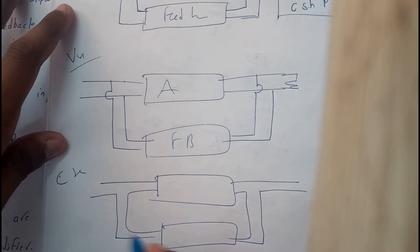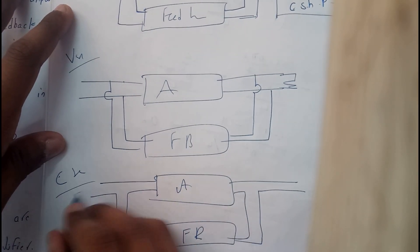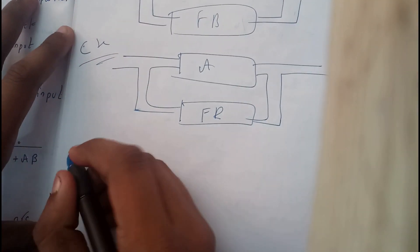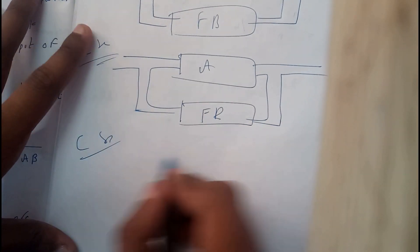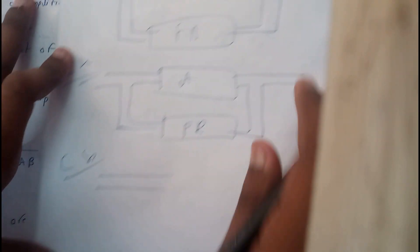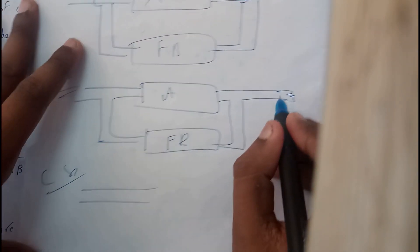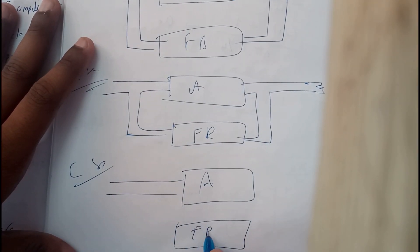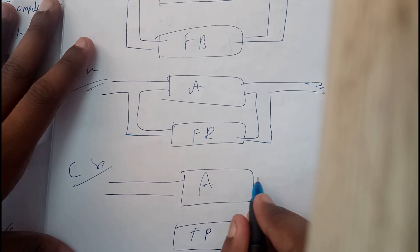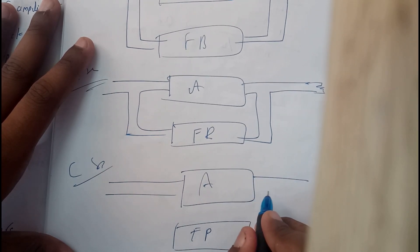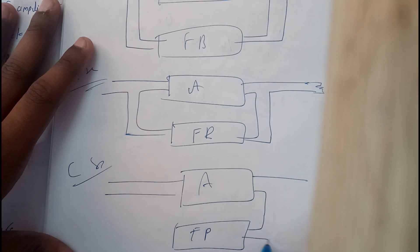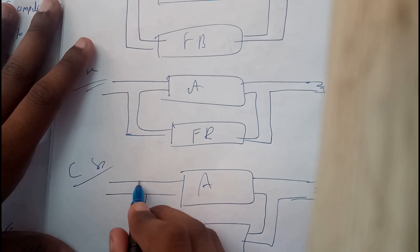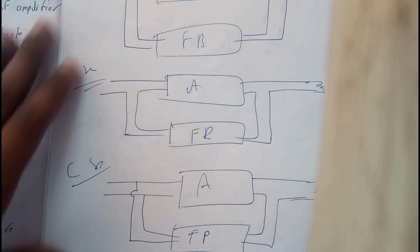For current series: amplifier and feedback network both in series. For current shunt (PS), the input is parallel and the output is series. Remember to always draw the resistor — don't forget it. The feedback network connects with a series connection at one side and a bubble (parallel) from the upper one. These are all the four diagrams.